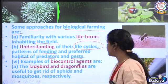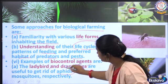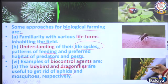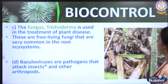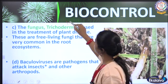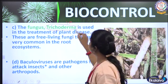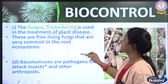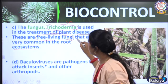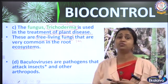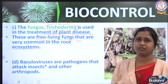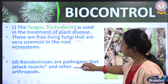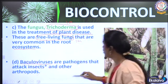Examples of biocontrol agents include the ladybird beetle and dragonflies, which get rid of aphids and mosquitoes respectively. Another important biocontrol agent — and a one-mark exam question — is Trichoderma, a free-living fungi found in the ecosystem, used in the treatment of plant diseases. This is different from fungi with symbiotic associations such as lichen and mycorrhizae.